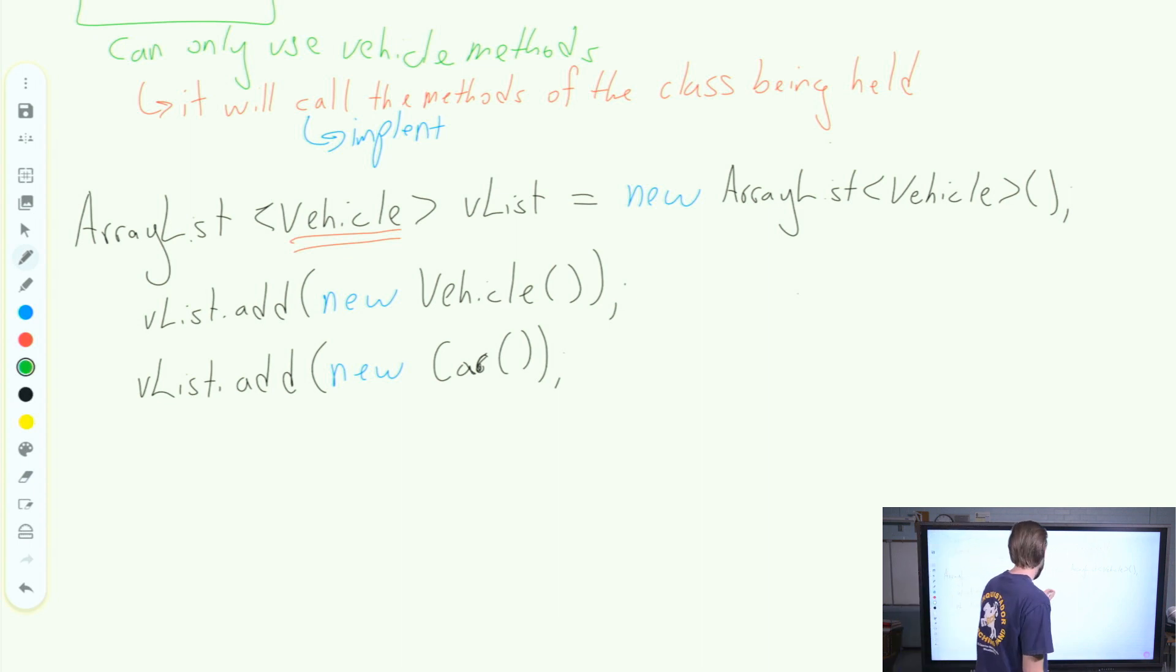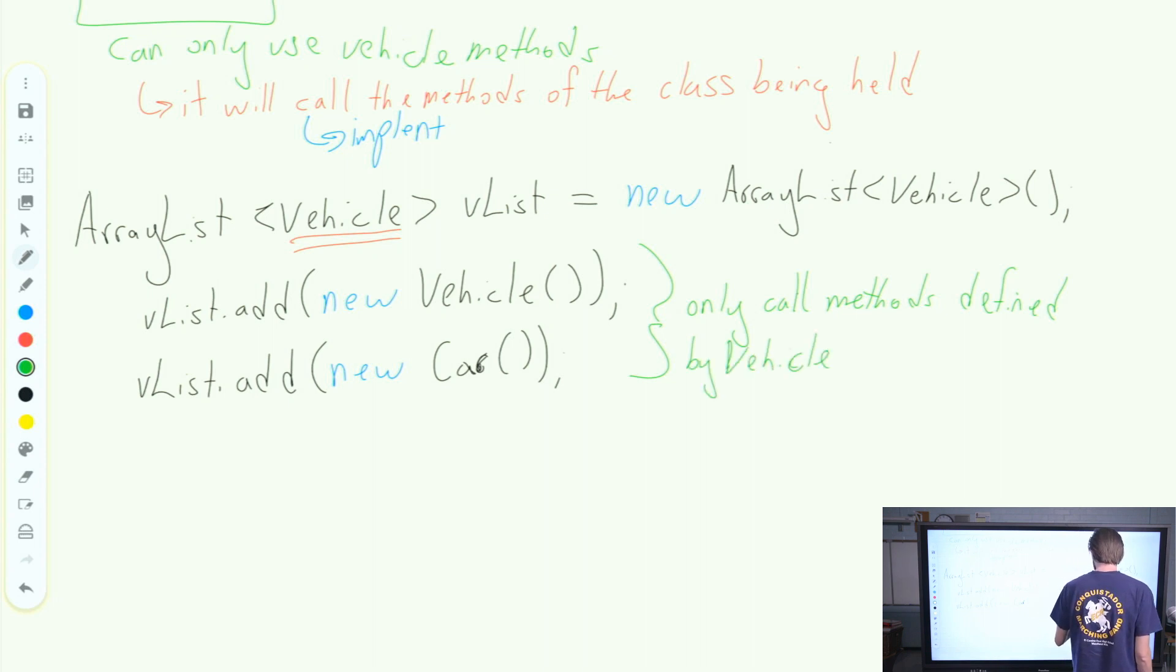This is perfectly legal. Even though it's a completely different class name, because car inherits from vehicle, I can absolutely call this. But still, whenever I access those objects, I can still only call methods defined by vehicle. Even though I put a car in this list, I can still only call the methods defined by vehicle. Still gives me lots of flexibility, but there are some limitations there.